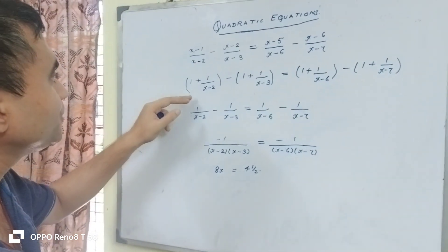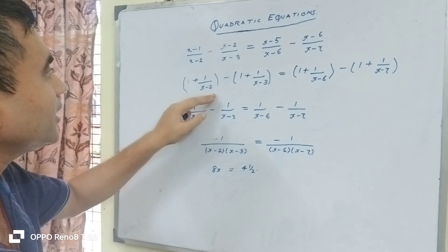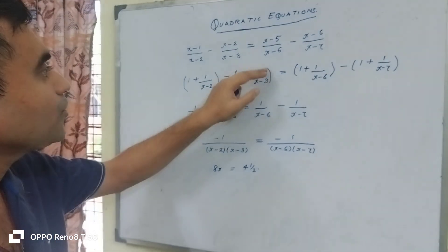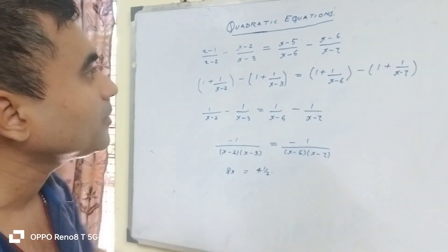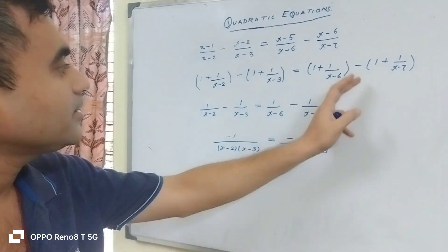So we have done that. First, 1 plus 1/(x-2), 1 plus 1/(x-3), 1 plus 1/(x-6), 1 plus 1/(x-7). And the 1 gets cancelled.